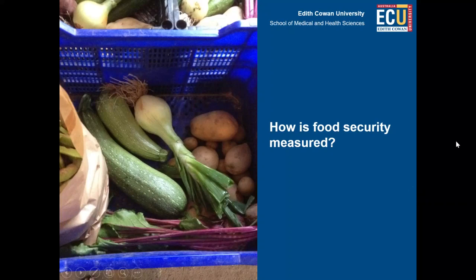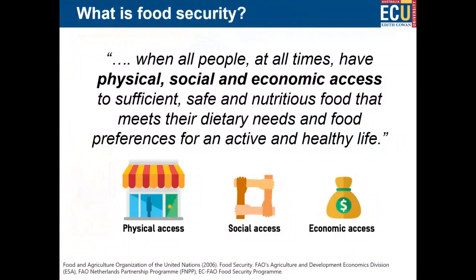Welcome to this webinar on how is food security measured? Let's start with what food security is. The Food and Agriculture Organization of the United Nations defines food security as when all people at all times have physical, social and economic access to sufficient, safe and nutritious food that meets their dietary needs and food preferences for an active and healthy life.